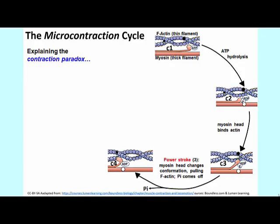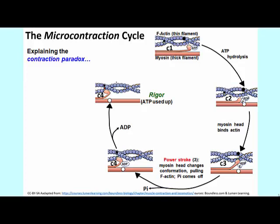This indicates that actin has slid relative to myosin. In the next step, the ADP comes off. Why? Because when the head binds to the actin, that binding alters the conformation ever so slightly so that the ADP no longer wants to stick, and so it comes off.